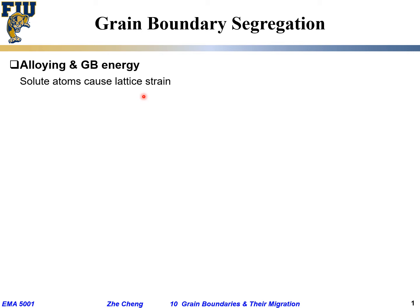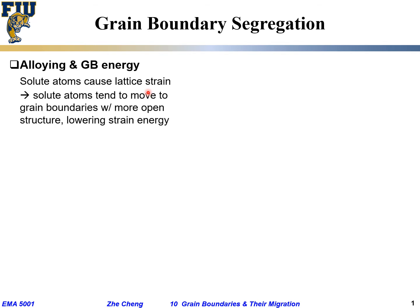Why? Because that foreign atom would be somewhat different in size — either bigger or smaller. If it's bigger, it's pushing everybody apart; if it's smaller, it's trying to shrink. So either way, it's causing so-called lattice strain. And because of this, it's causing the grain energy to go up a little bit, because everybody feels the energy, feels the pressure — that causes grain energy to go up.